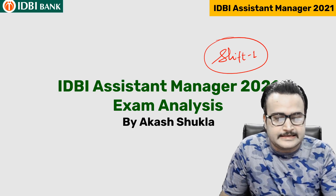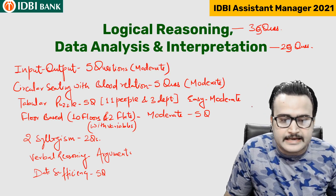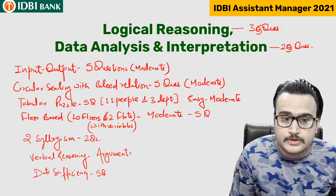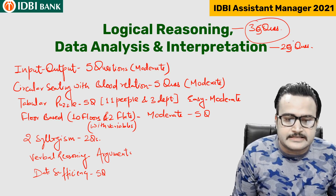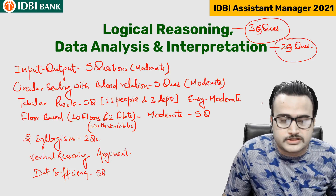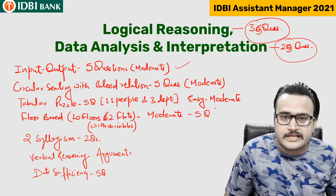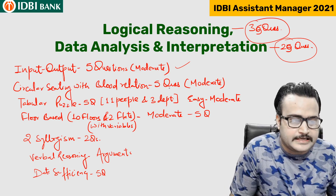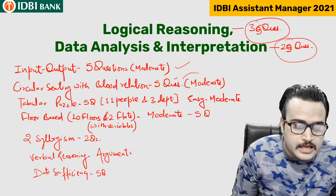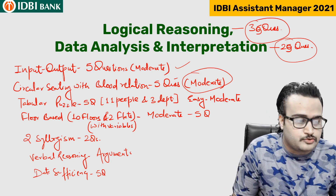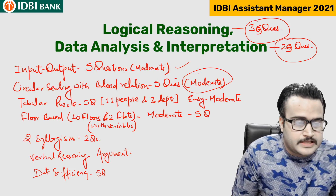Let's see what was there in Shift 1. In Logical Reasoning and Data Analysis and Interpretation, students are saying around 35 questions were from the reasoning section and around 20 to 25 questions from the data analysis or interpretation section. Input and output — 5 questions, moderate in nature. Circular sitting arrangement with blood relation variables — 5 questions, easy to moderate to difficult.